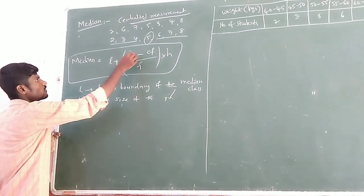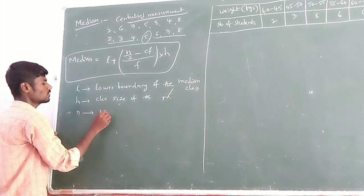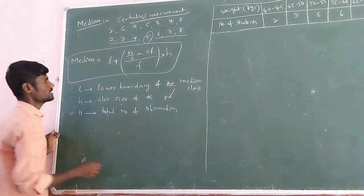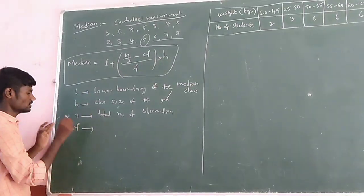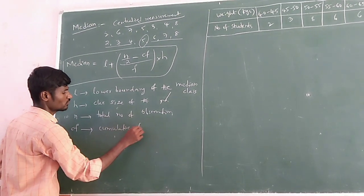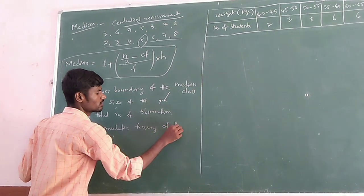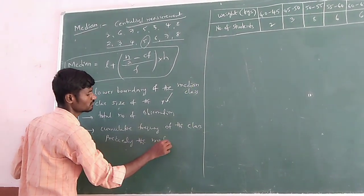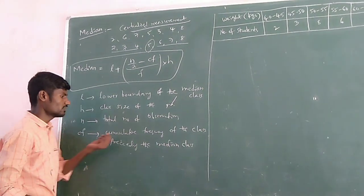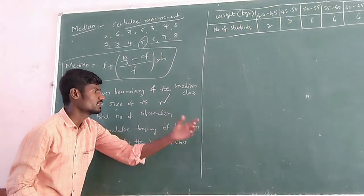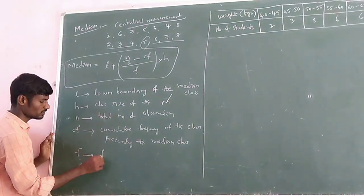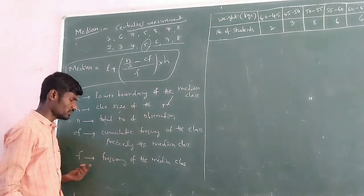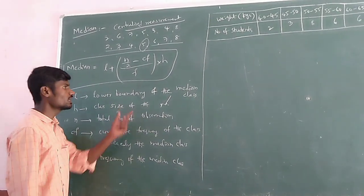Next, N by 2. Before that, N is what? N is the total number of observations, nothing but the sum of all frequencies. Next, Cf — what is Cf? Cf is the cumulative frequency of the class preceding the median class, means the class before it. The frequency opposite to the median class is F, and the cumulative frequency above that is Cf.